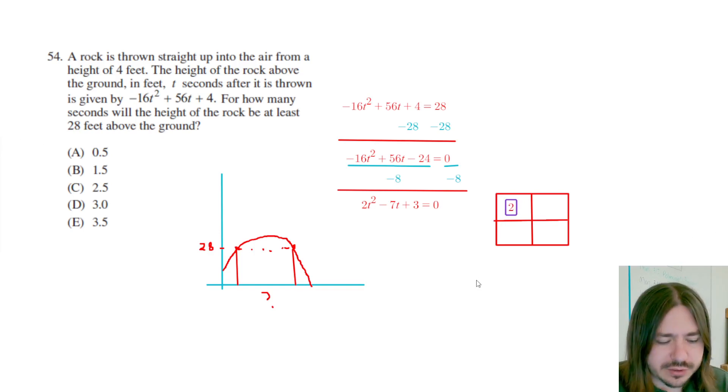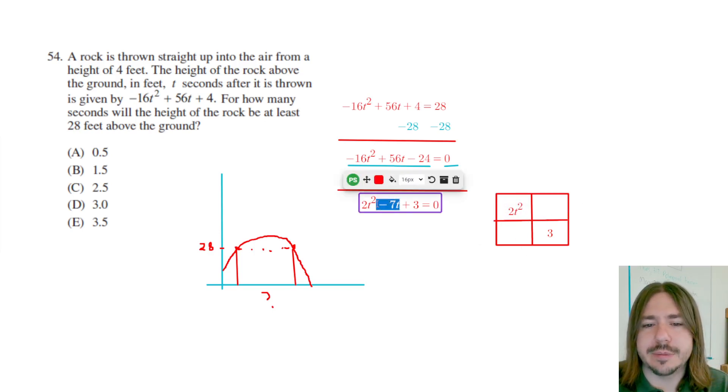But I'll talk you through it here. So in the top left box, we're going to write 2t squared. That's the first term. And then the constant term three, we're going to put right here. And so what we're trying to do is we're trying to come up with two factors. Basically what we want to do is we come up with terms that when we multiply the column by the row, we get what's inside the box.